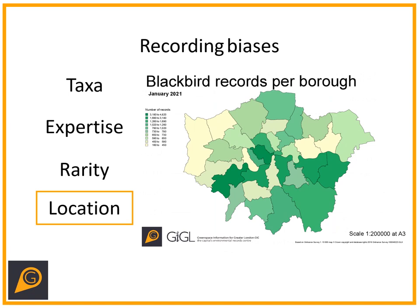The last bias is about location. People tend to record either in areas near them or that are known for good recording. Richmond Park — highlighted as the Borough of Richmond in the south west in darkest green — has the most blackbird records. That's not to say there are more blackbirds there, but due to the amount of footfall and recording activity, we have far higher records there. So it's important not just to pick the richest and best sites, but to try a more blanket approach to the area you're interested in.